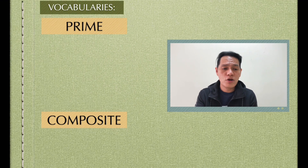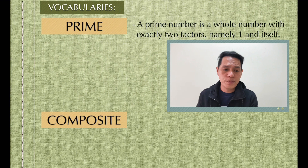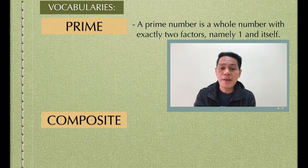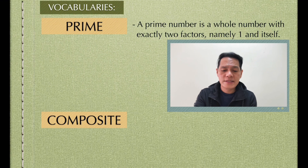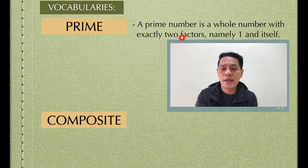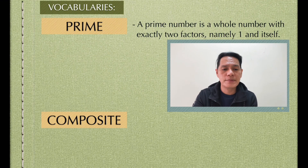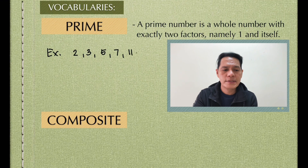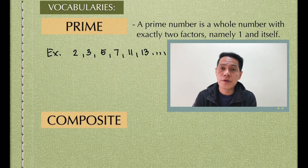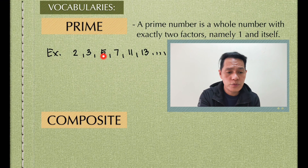I have here another two words: prime and composite. When we say prime, a prime number is a whole number with exactly two factors, namely one and itself. Examples of prime numbers are 2, 3, 5, 7, 11, and 13.